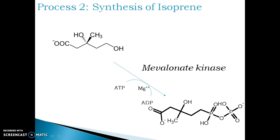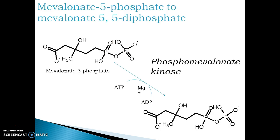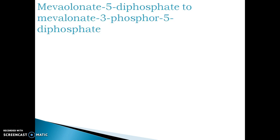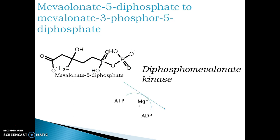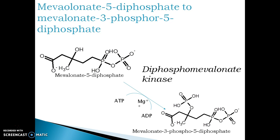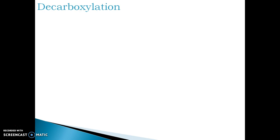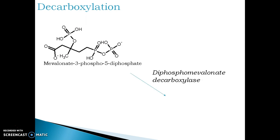Mevalonate kinase converts mevalonate into mevalonate 5-diphosphate. Mevalonate 5-diphosphate is then converted to mevalonate 3-phospho-5-diphosphate by the action of diphospho-mevalonate kinase, where one molecule of ATP is utilized for phosphorylation. Mevalonate 3-phospho-5-diphosphate is then decarboxylated with removal of one pyrophosphate by the enzyme diphospho-mevalonate decarboxylase, giving isopentyl-diphosphate.